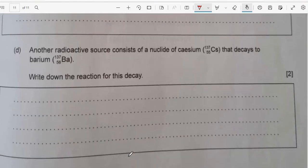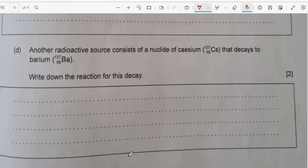Now section D: another radiation source consists of nuclide of cesium-55. This is the number of protons, and 137 the atomic number which is the number of neutrons plus the number of protons, that decays into barium-56. So I have cesium: I want to write down that decay. I have cesium-55 and the atomic number 137.